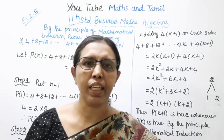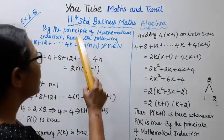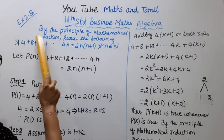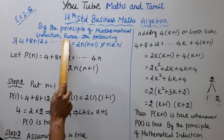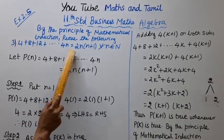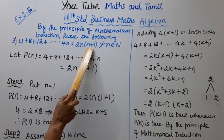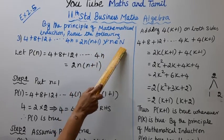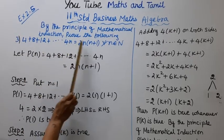Hello students, welcome to Maths and Tamil channel. 11th standard Business Maths Algebra, Exercise 2.5, third sum. By the principle of mathematical induction, prove the following: 4 + 8 + 12 + ... + 4n = 2n(n + 1) for all n belongs to N. Left hand side, right hand side.